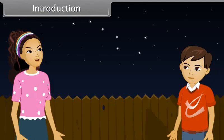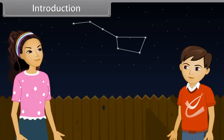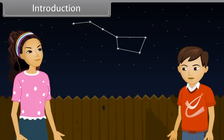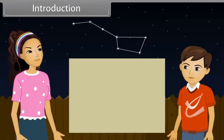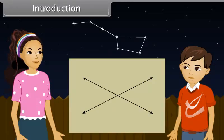Hey Ajay, look at the stars. Wow, they are looking so beautiful. They look like points. Yes, do you know what do we get if we join two points? Yes, we get a line. See that big dipper? All the seven stars are joined. Didi, what happens when two lines intersect each other? Good question. When two lines intersect each other, then angles are formed. Come, I will tell you more about lines and angles and their properties.